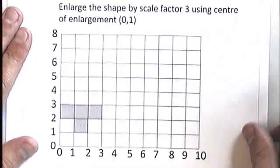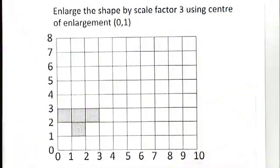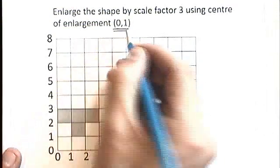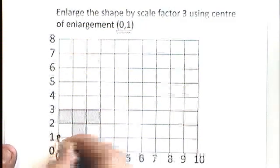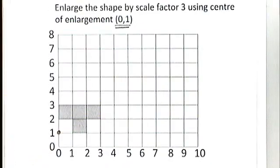Where enlargement becomes a little bit more tricky, is where we have to do something like this. Enlarge the shape by scale factor 3, using center of enlargement (0,1). Now to get to grips with the center of enlargement, you need to start to think about how you might blow something up from a particular point. So make something larger from a particular point. Let's mark the position of (0,1) on here. There it is. 0 along, 1 up.